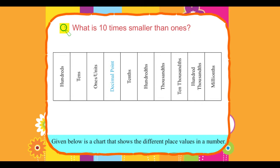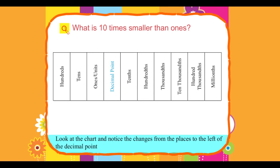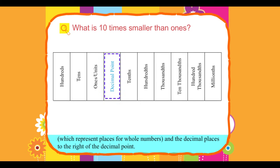Given below is a chart that shows the different place values in a number. Look at the chart and notice the changes from the places to the left of the decimal point, which represent places for whole numbers, and the decimal places to the right of the decimal point.